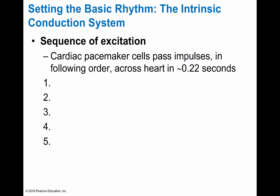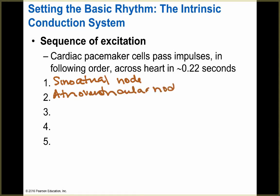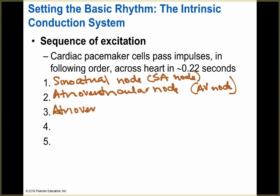The cardiac pacemaker cells pass this impulse in order, and it takes about 0.22 seconds for the total to happen. It starts in the sinoatrial node, also known as the SA node. From there, it goes to the atrioventricular node, or AV node, and then to the atrioventricular bundle, or AV bundle.